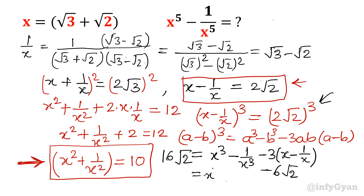So x cube minus 1 over x cube minus 6 root 2 equals 16 root 2. Therefore x cube minus 1 over x cube equals 16 root 2 plus 6 root 2, which gives us 22 root 2.